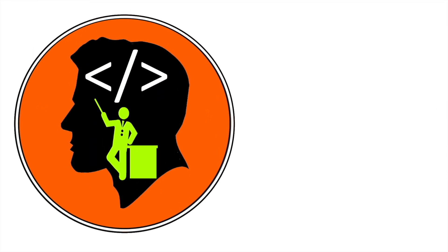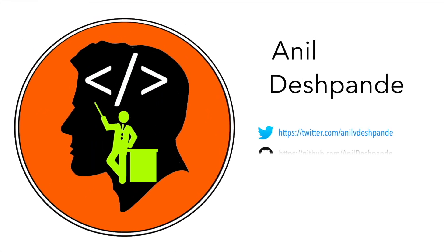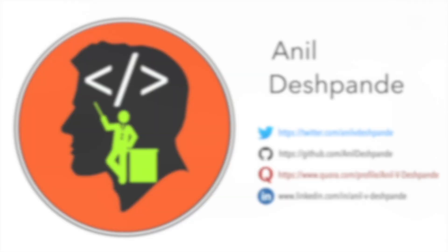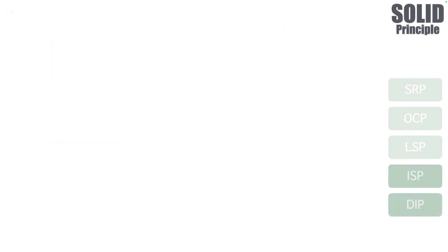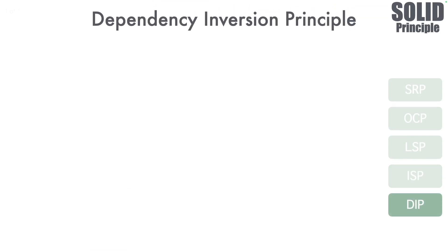Hi folks, co-tutor here and my name is Anil Deshpande. Welcome to the final video on SOLID principles. This is a series where we were looking at various principles and how the code that violates those principles looks like. In the previous video, we have seen how the code violating interface segregation principle looks like. And before that, we have gone through Liskov substitution, open and closed, and single responsibility principle violations. Now we will visit the last one which is DIP, that is dependency inversion principle.